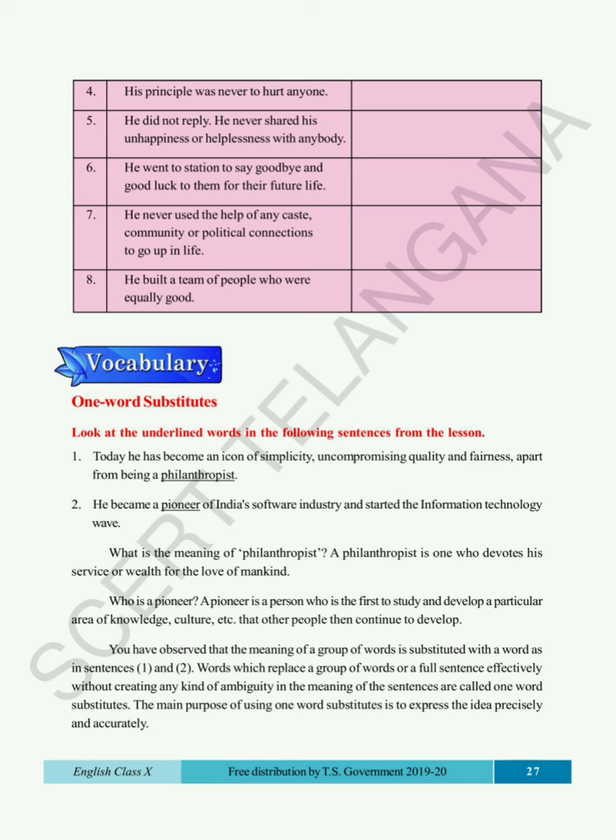You have observed that the meaning of a group of words is substituted with a single word. Words that replace a group of words or a full sentence effectively without creating any ambiguity in the meaning are called one word substitutes. The main purpose of using one word substitutes is to express the idea precisely and accurately without changing the meaning of the sentence. Now moving to the next page — there is a table, which is a list of one word substitutes.